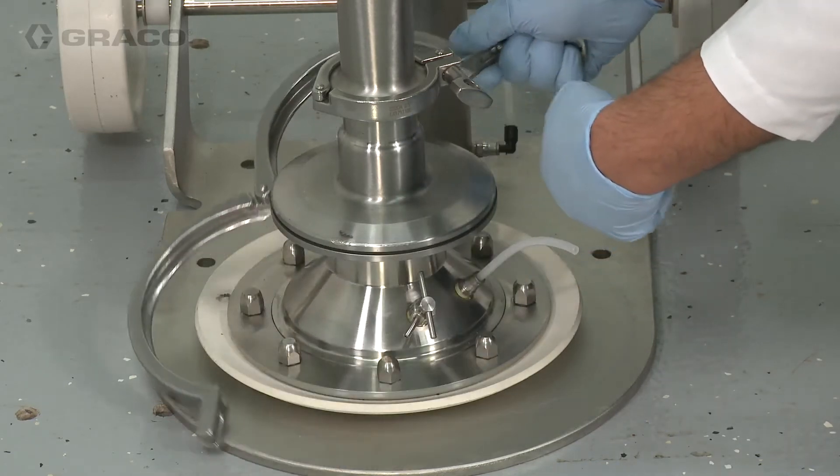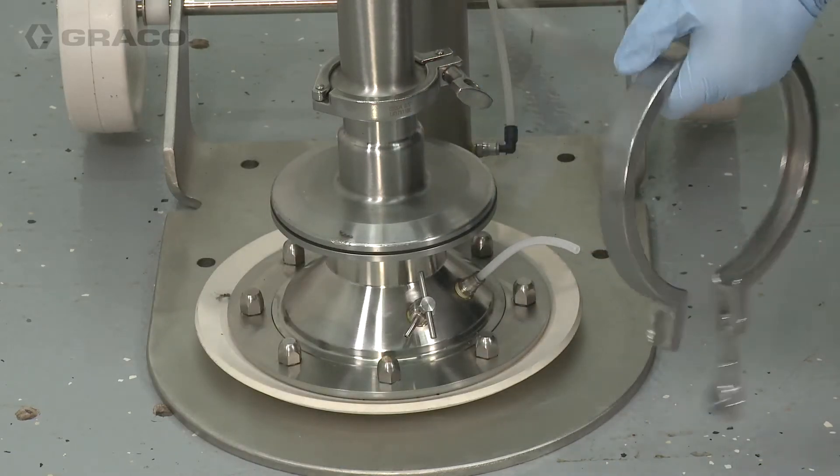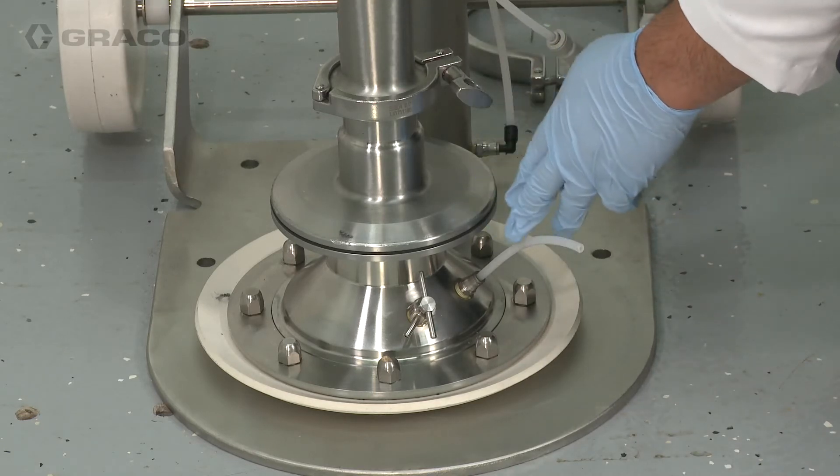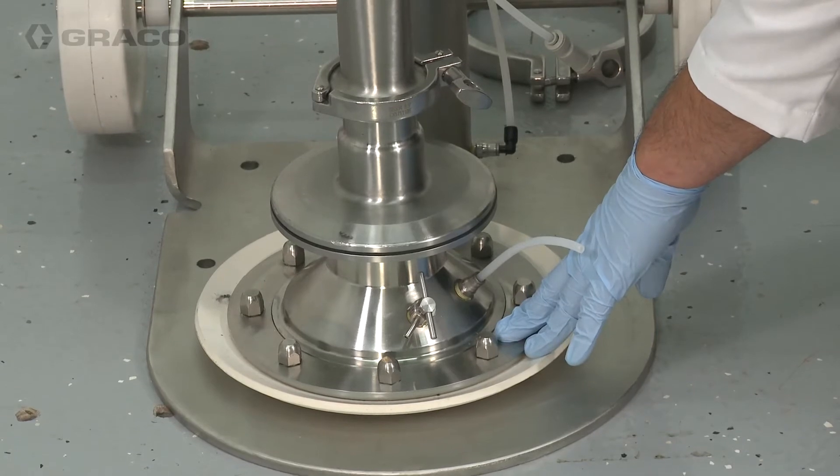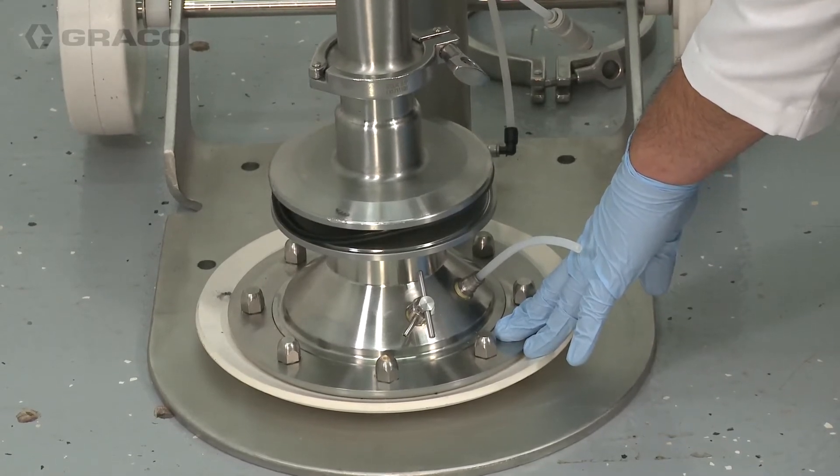If the platten doesn't independently separate from the pump, use the air controls to slightly raise the platten off of the baseplate. Then, using open hands on opposite sides of the platten, apply downward hand pressure to break the seal.